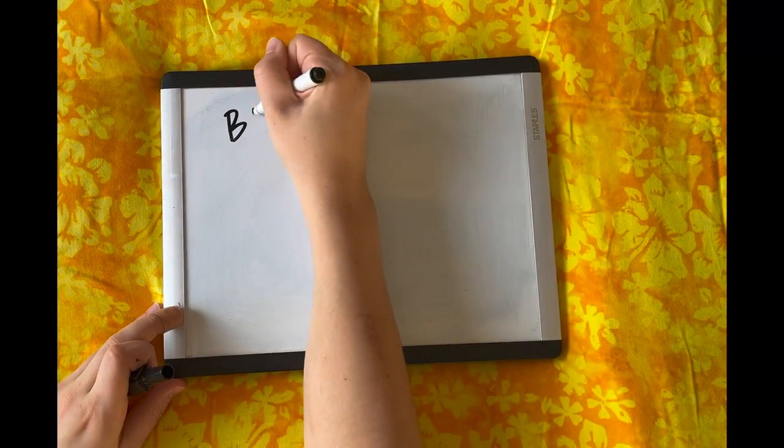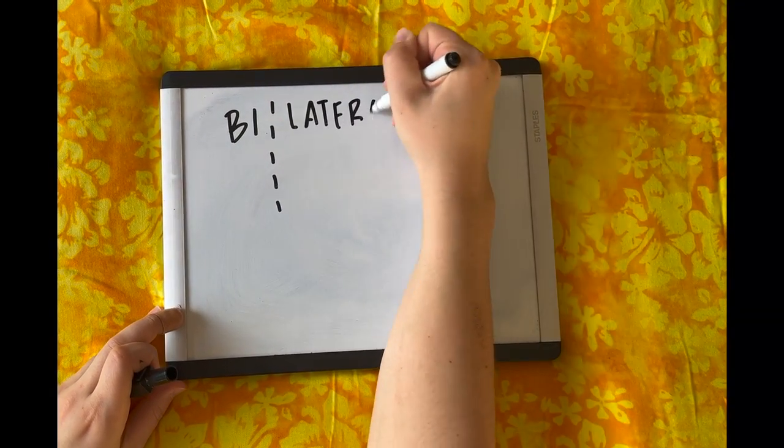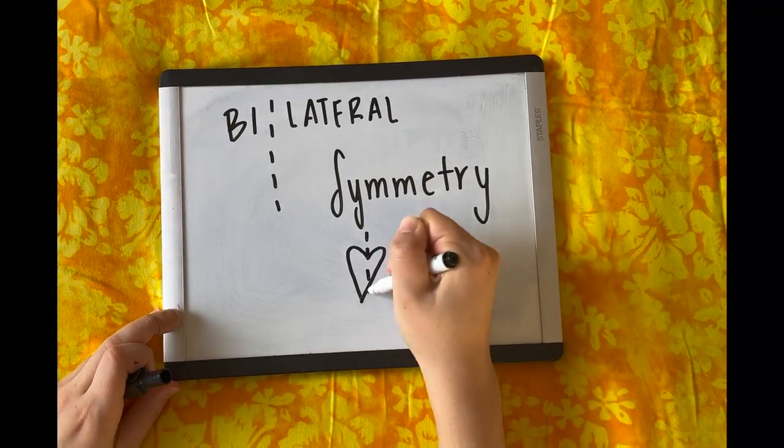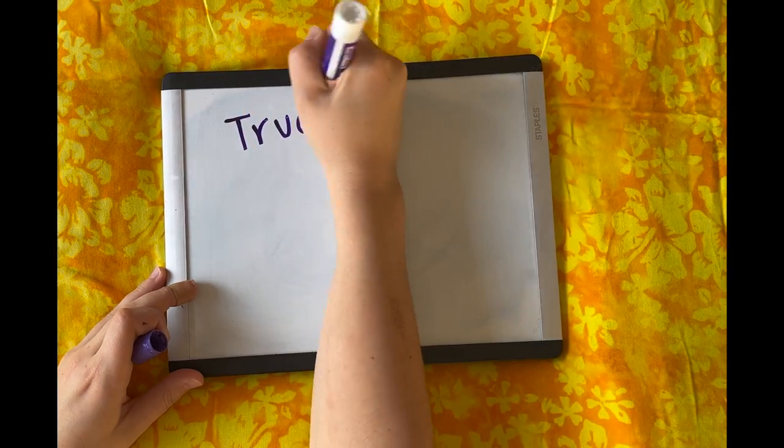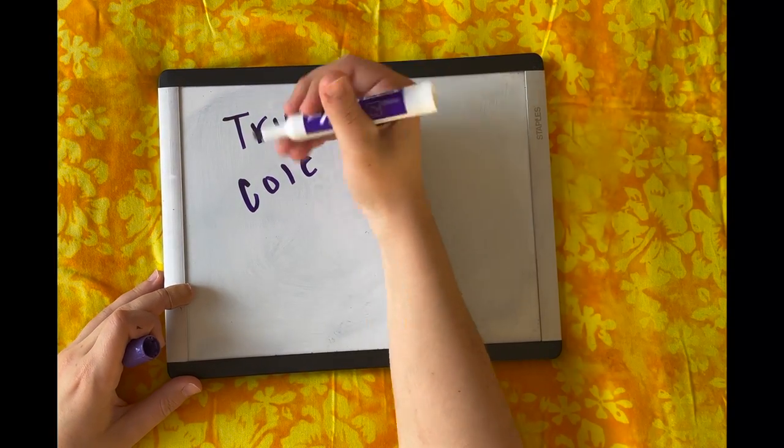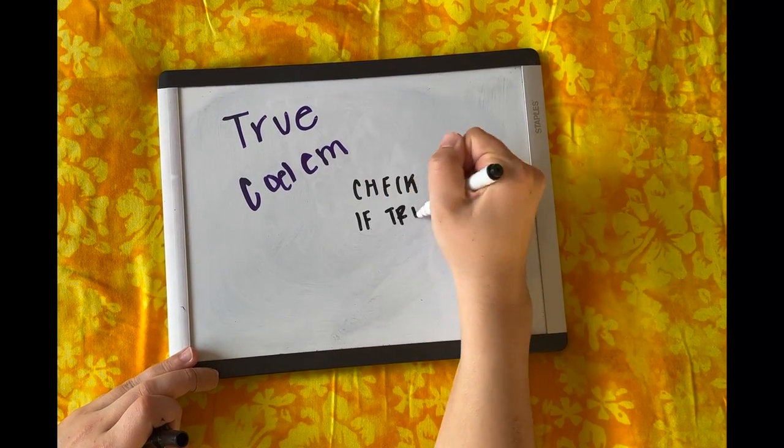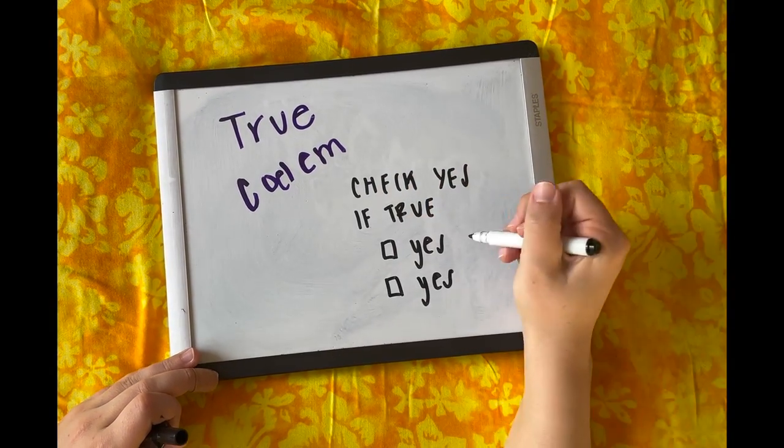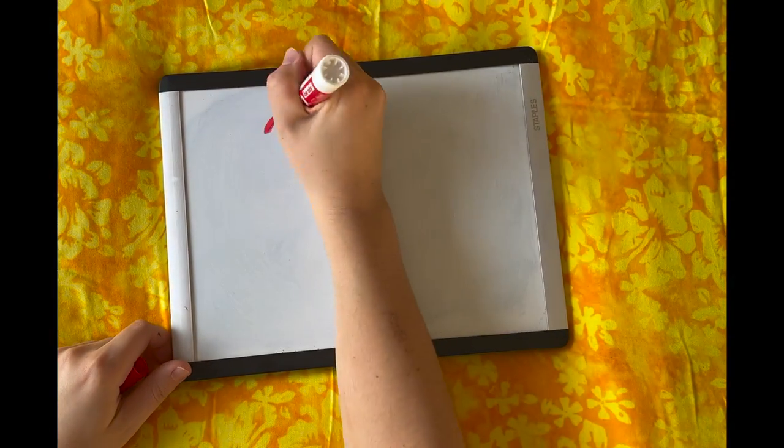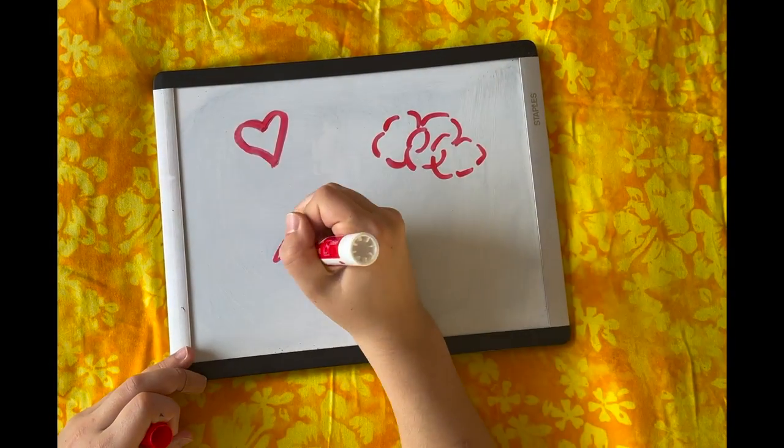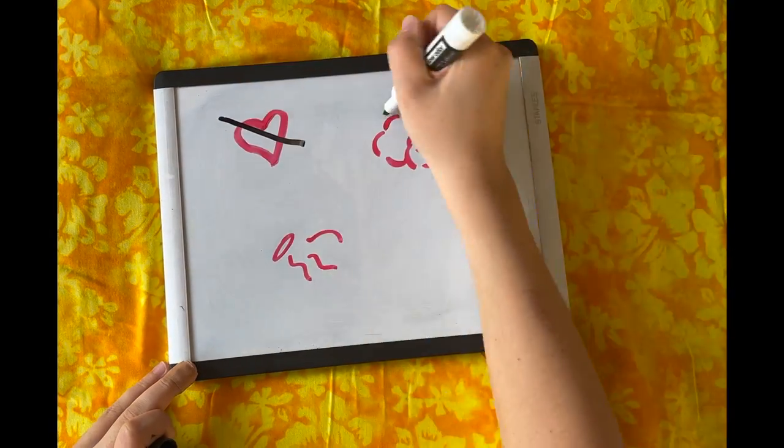The Bryozoa has characteristics such as bilateral symmetry, a true coelom, no circulatory system, no gaseous organs, and an excretory system.